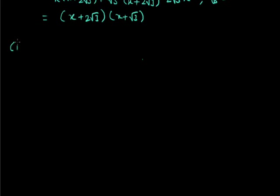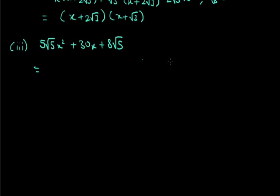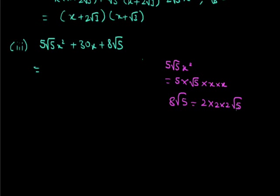We need to understand what the middle term is, and accordingly factorize the first and last terms. Now consider the example: 5√5x² + 30x + 8√5. To split the middle term, we look at the first and last terms. The first term 5√5x² has factors: 5√5×√5×x×x. The last term 8√5 has factors: 2×2×2×√5. We need to combine these factors so their sum gives the middle term 30x.